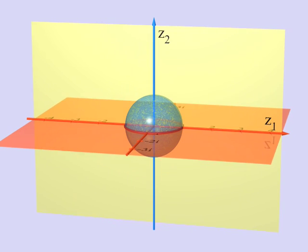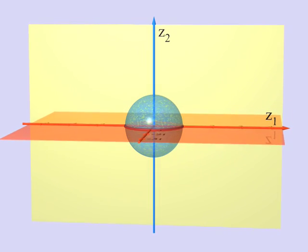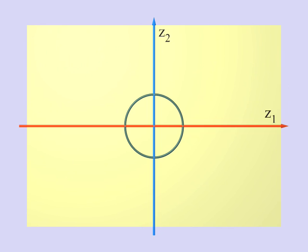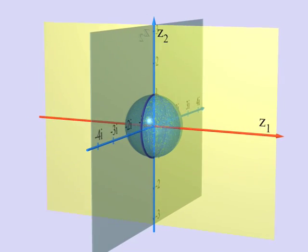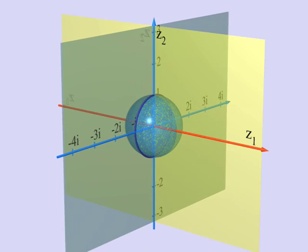You see, the three-sphere S3 intersects the first axis in a circle. The same is true for the second axis which intersects the three-sphere in a circle as well, the blue circle.